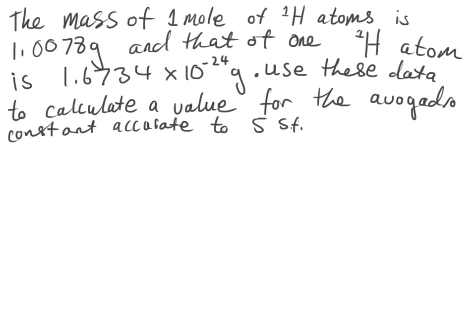In this video I'm going to solve a problem to do with calculating the value of the Avogadro constant. The question gives the mass of one mole of ¹H atoms — a particular isotope of hydrogen with one proton — as 1.0078 grams, and that of one ¹H atom as 1.6734 × 10⁻²⁴ grams. We need to use these data to calculate a value for the Avogadro constant accurate to five significant figures.